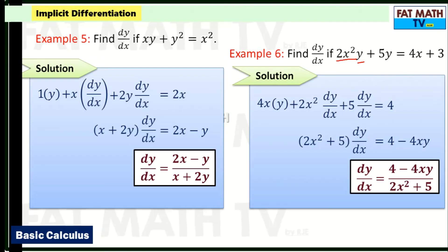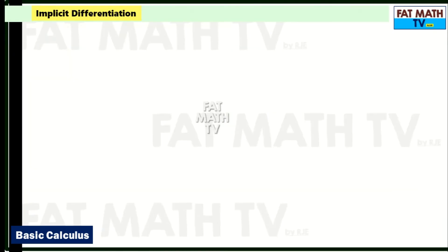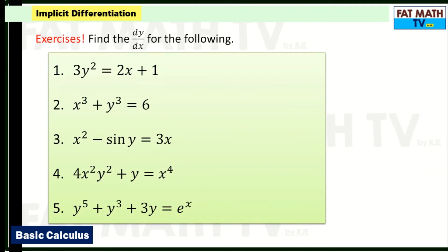These six examples should be enough for you to answer the practice exercises. Find dy/dx for the following: (1) 3y squared equals 2x plus 1; (2) 2x cubed plus y cubed equals 6; (3) x squared minus sine y equals 3x; (4) 4x squared y squared plus y equals x to the 4th; (5) y to the 5th plus y cubed plus 3y equals e to the x. Pause the video to answer, then reveal the answers one by one to check your work.